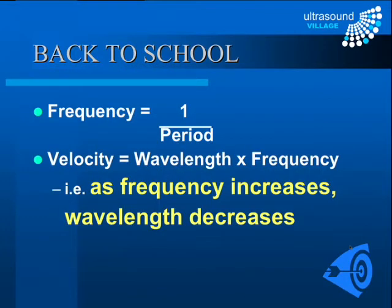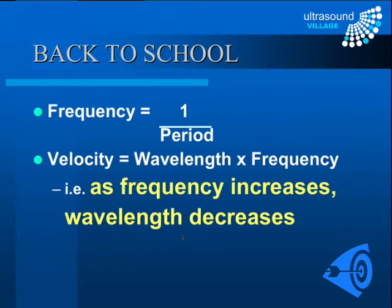There is a relationship between these quantities. Frequency is defined as the inverse of the period. One of the most fundamental relationships in ultrasound physics is that velocity equals the product of wavelength and frequency — V = fλ — and the velocity is constant in a given tissue. What this means is that as frequency increases, wavelength will decrease. The two are inversely related.